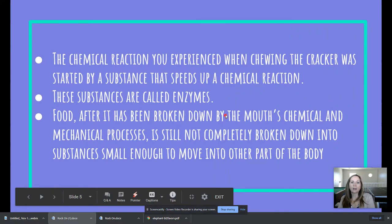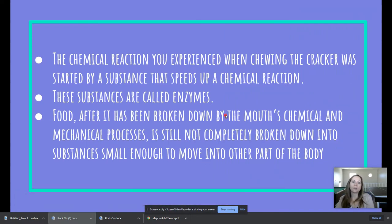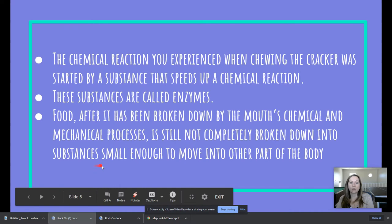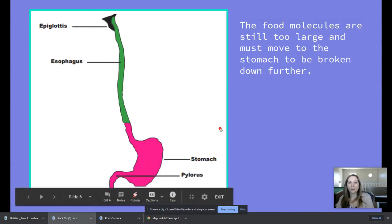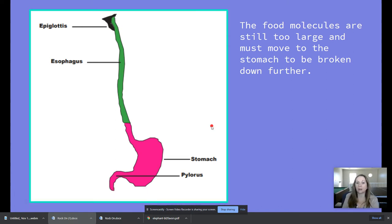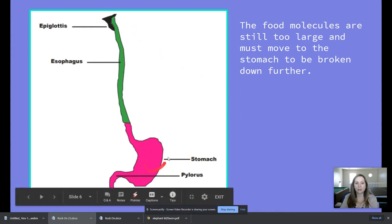So the chemical reaction you experienced when chewing the cracker was started by a substance that speeds up a chemical reaction. These substances are called enzymes. Food after it has been broken down by the mouth's chemical and mechanical processes is still not completely broken down into substances small enough to move into other parts of the body. So the food molecules are still too large and must move to the stomach to be broken down further. So here they're going to go down this long tube and into our stomach.